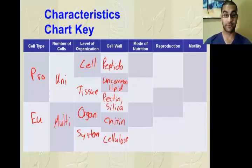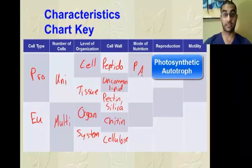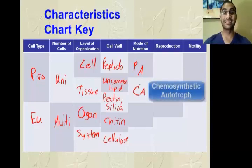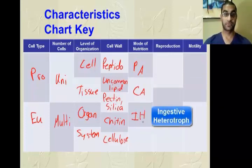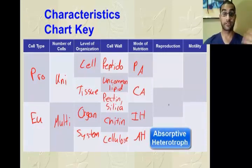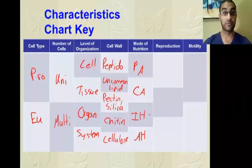Mode of nutrition refers to how they feed. Within autotrophs: photosynthetic autotrophs — PA — get their energy from solar energy, and chemosynthetic autotrophs — CA — make their own food using chemical concentrations like sulfur and hydrogen. Within heterotrophs: ingestive heterotrophs — IH — take food in first then break it down; absorptive heterotrophs — AH — break the food down from the outside with enzymes, then those small particles are immediately absorbed and used as a food source.